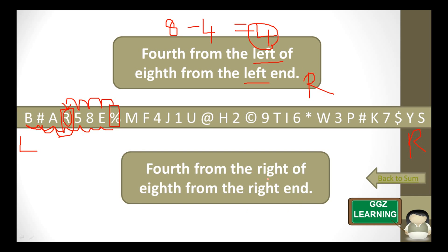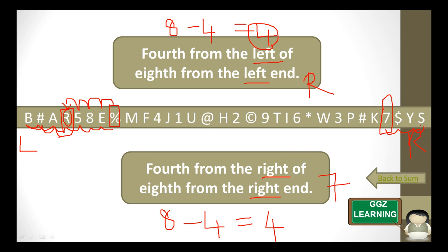Same applies for the right side. If both directions are right and numbers are given, we subtract: 8 minus 4 equals 4, and we find the 4th element from the right side. Counting 1st, 2nd, 3rd, and 4th — so 7 will be the answer for that question. This is an easy trick to reduce our time.